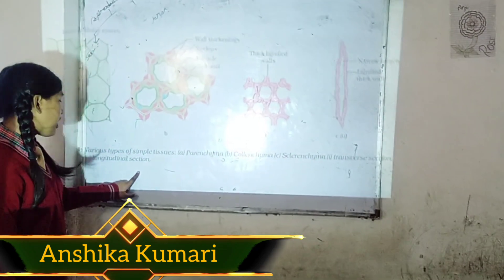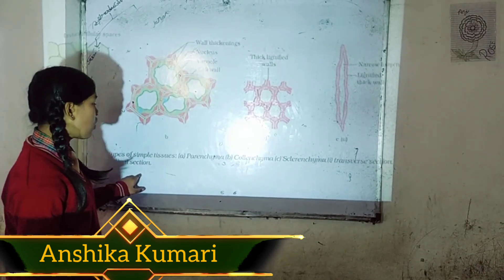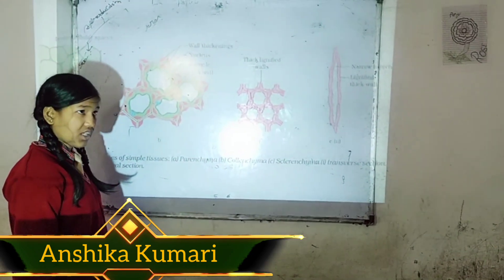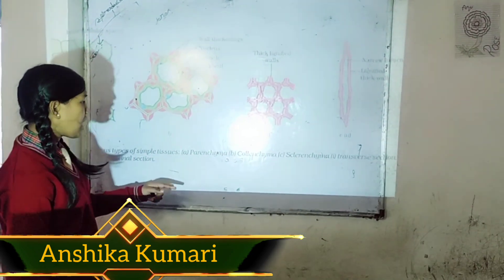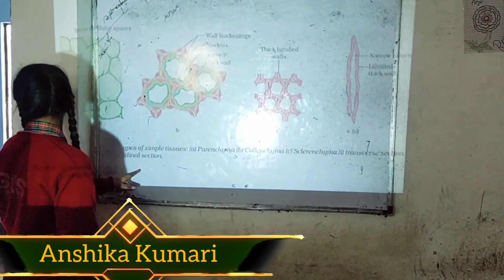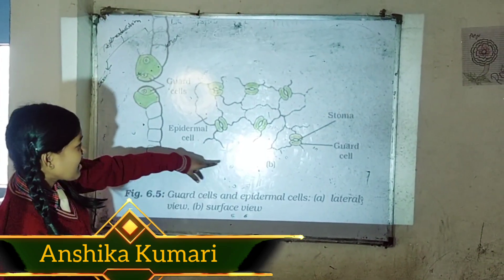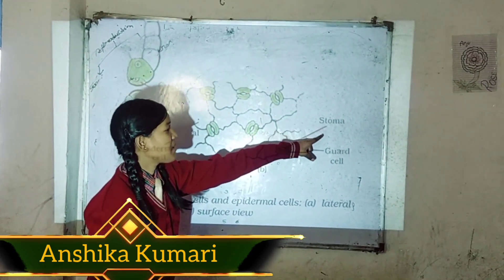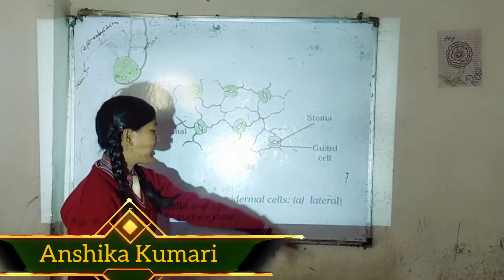Chlorenchyma contains chlorophyll and performs photosynthesis. Parenchyma features include epidermal cells, stomata, spaces for oxygen exchange, and guard cells.